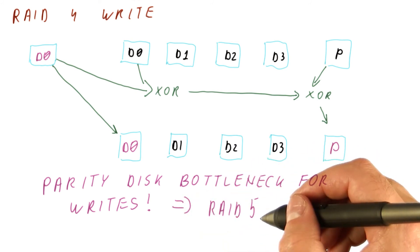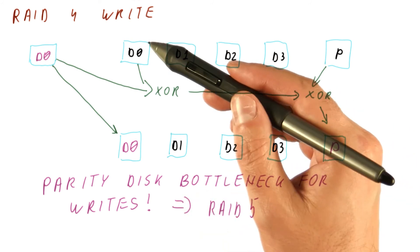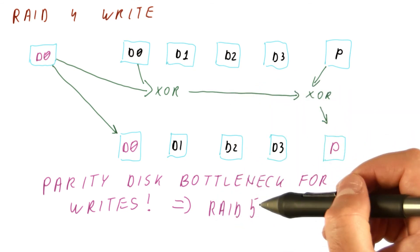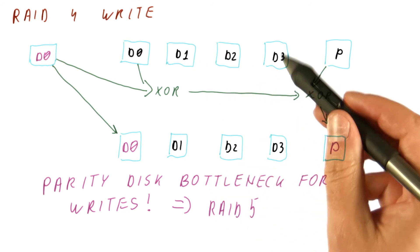RAID 5 has exactly the same reliability property as RAID 4 and very similar read performance, but it fixes the write performance.